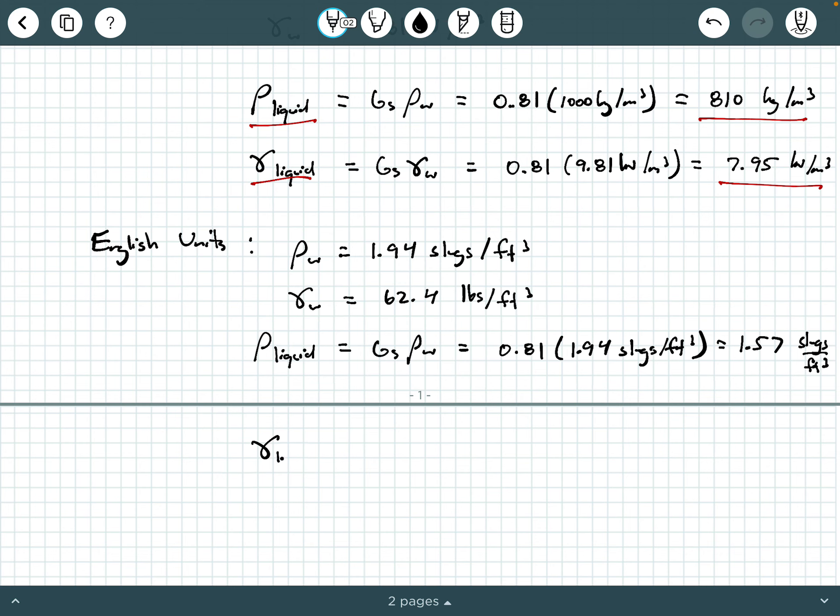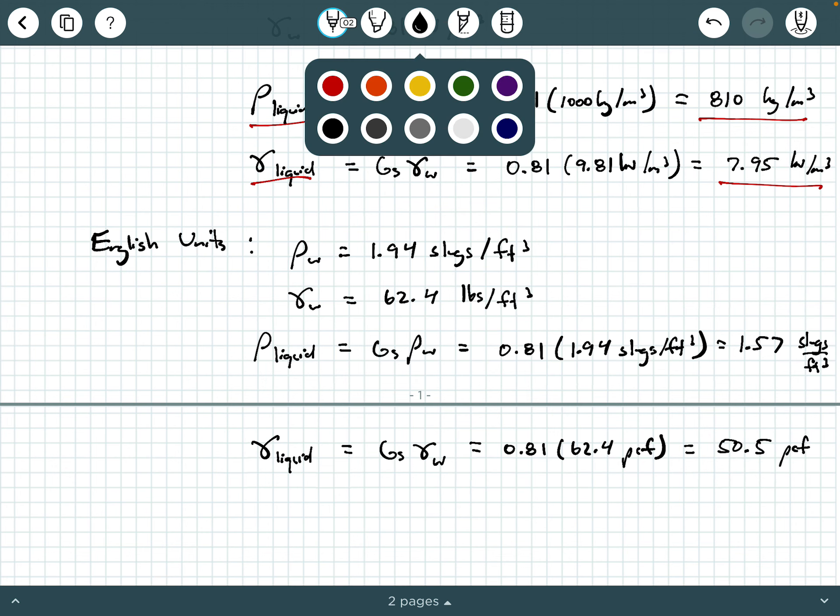Now, what about our unit weight of this liquid? So the unit weight of the liquid is g sub s times gamma water, and of course, that's 0.81 times 62.4 PCF, and we end up with 50.5 PCF, or pounds per cubic foot if you prefer.